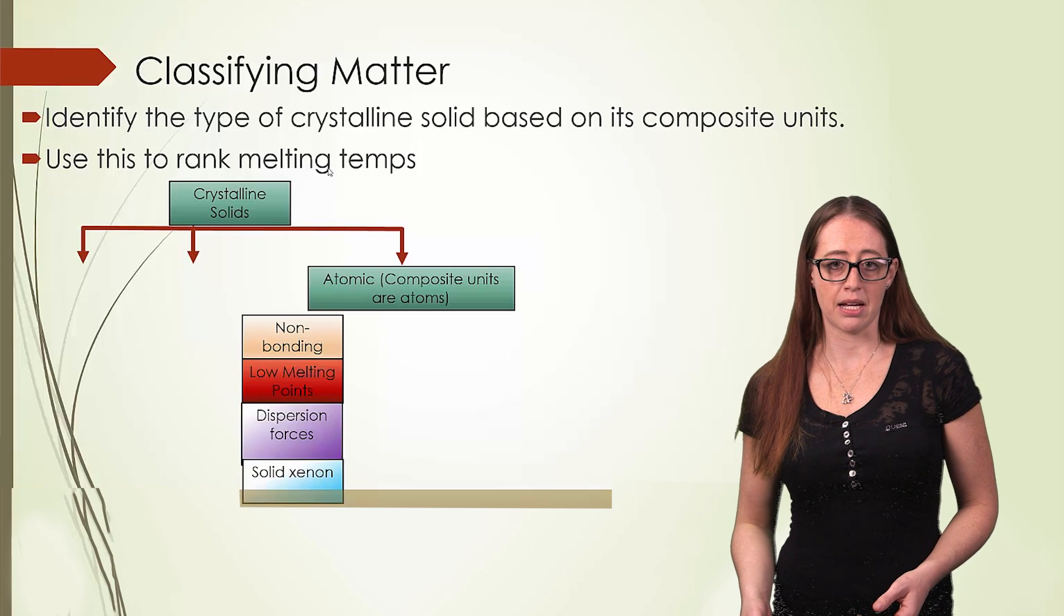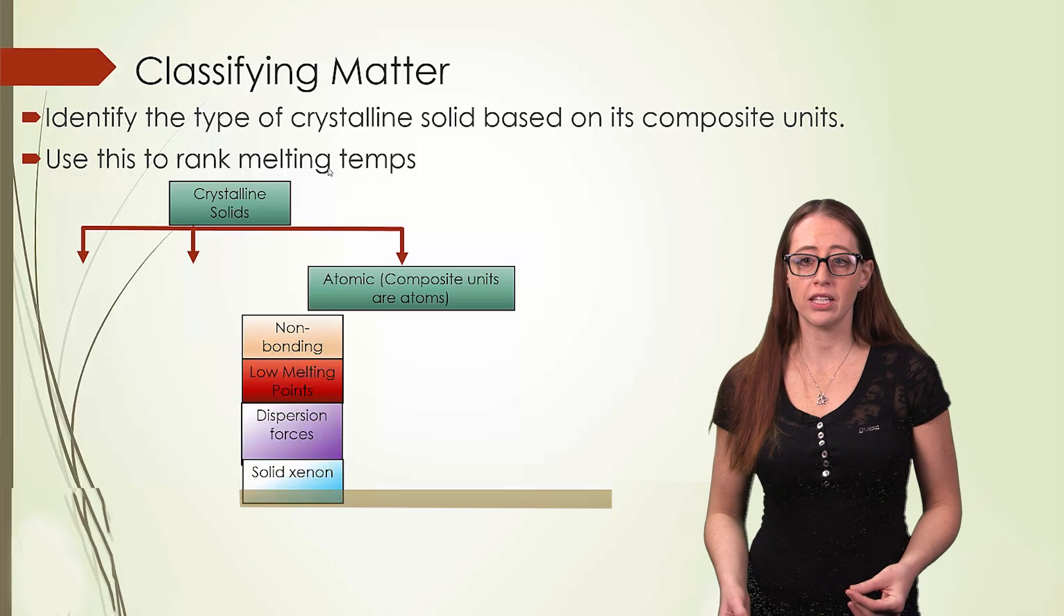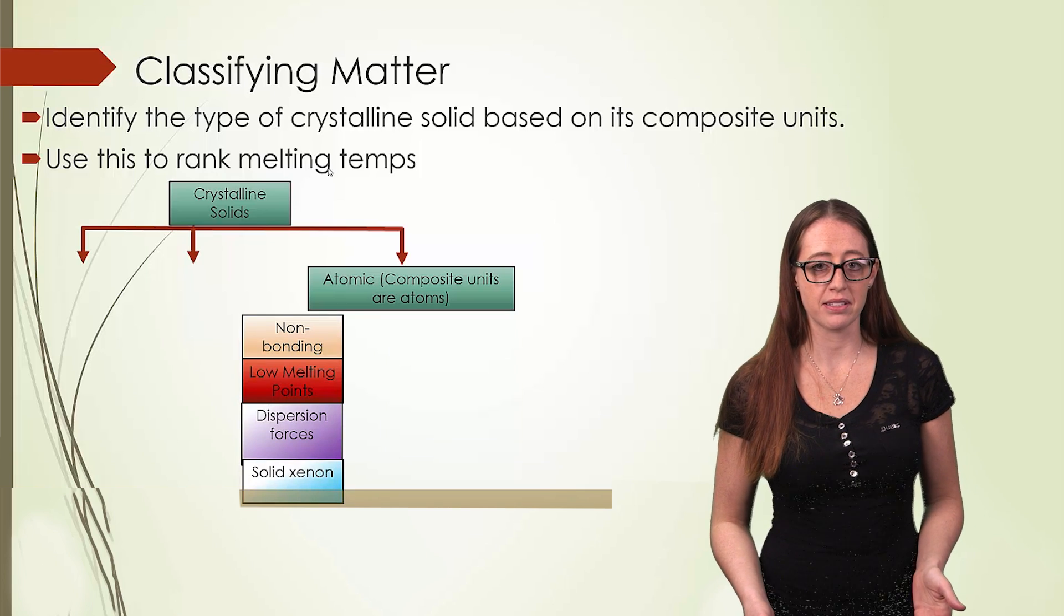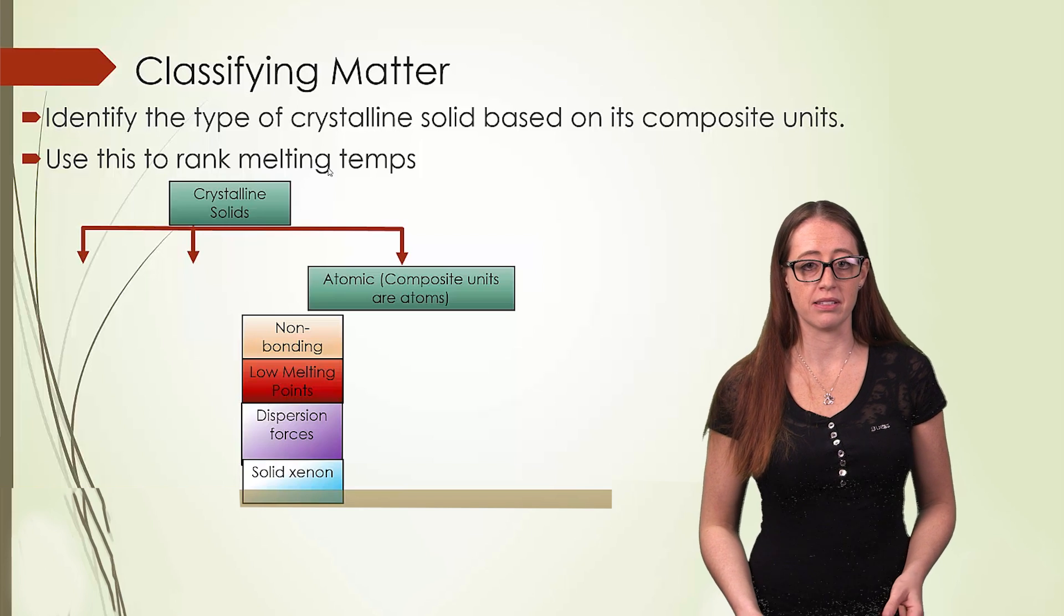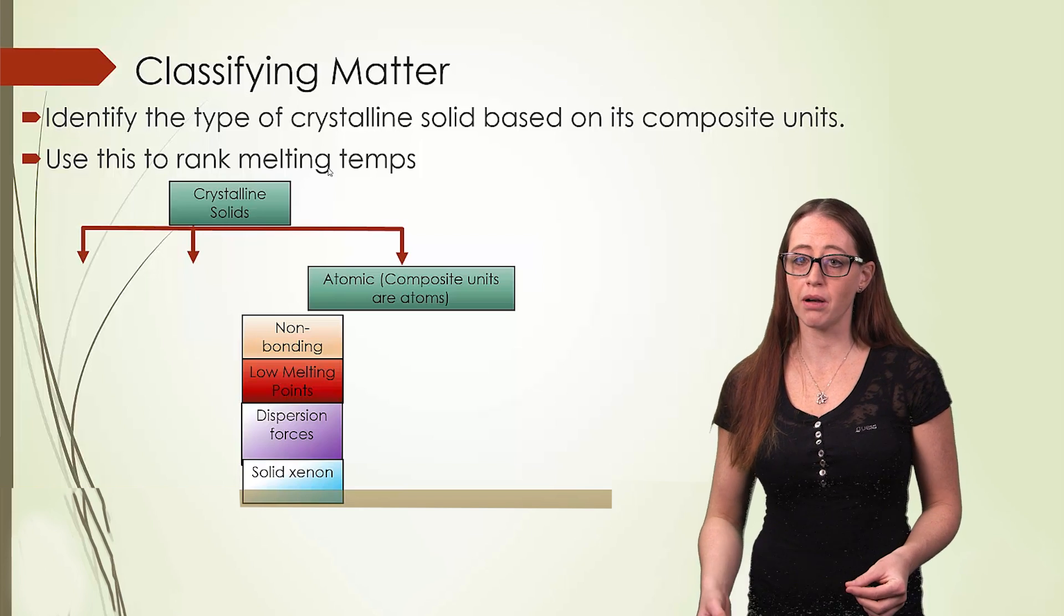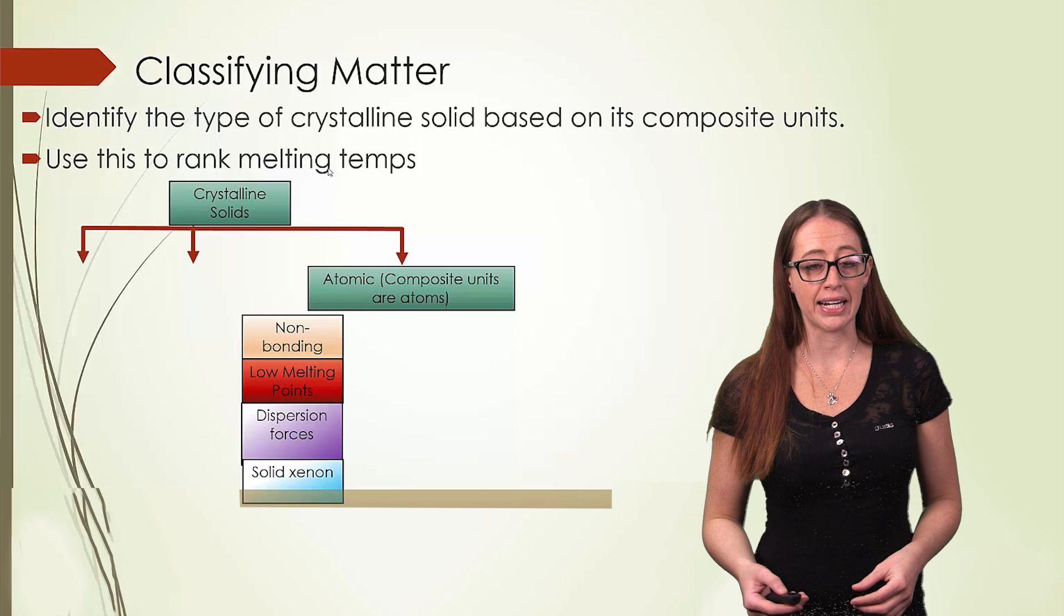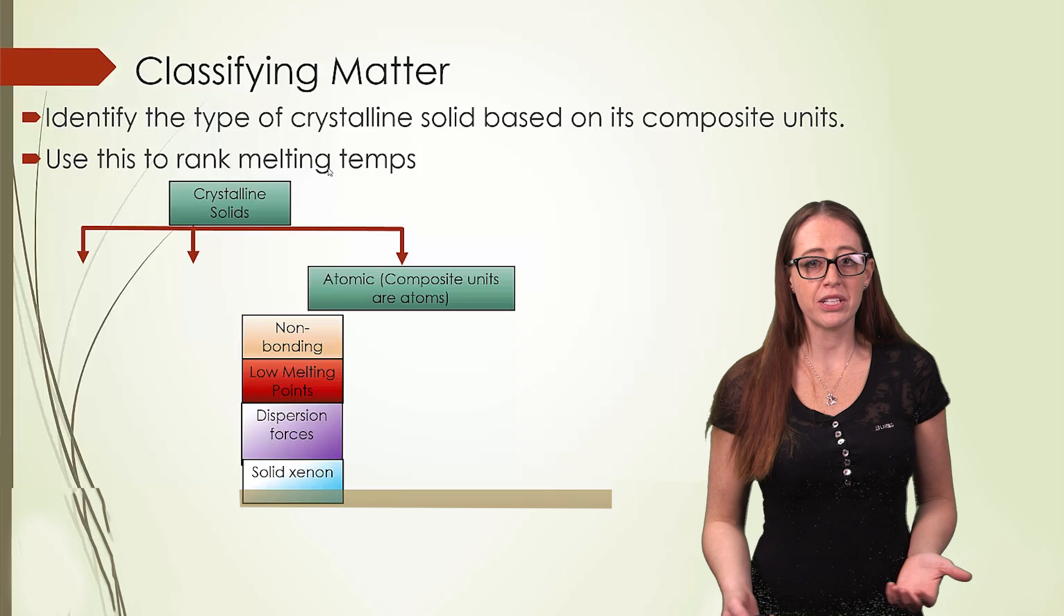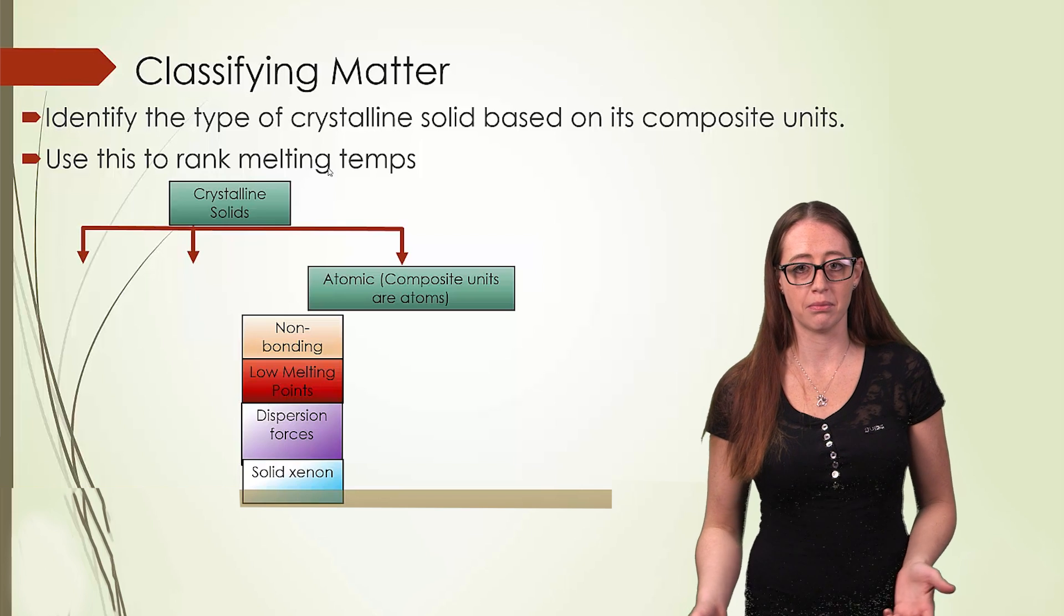There are non-bonding atomic solids, which have very low melting temperatures, because they are only held together by dispersion forces. And we know that dispersion forces tend to be quite weak, and they're especially weak when things are small. So if you're talking about an atomic solid held together by dispersion forces, each individual atom is going to have pretty small forces.